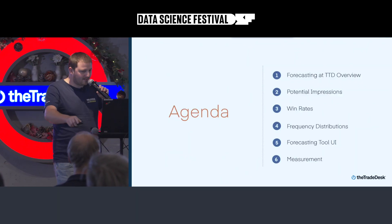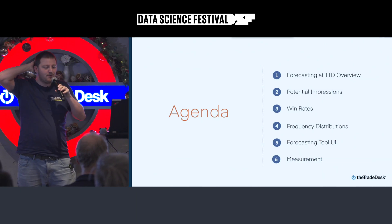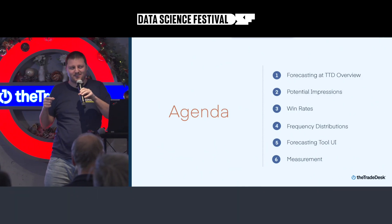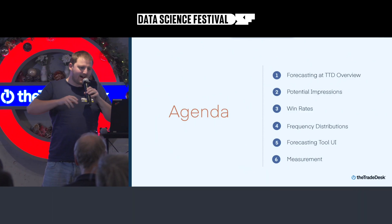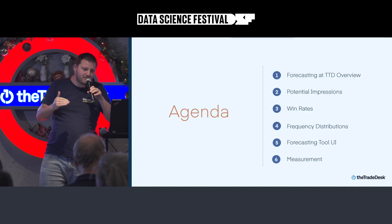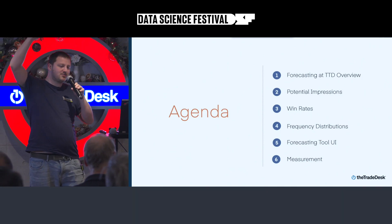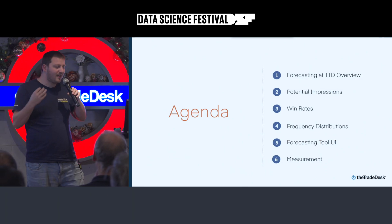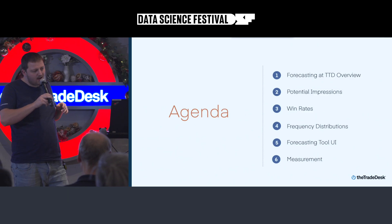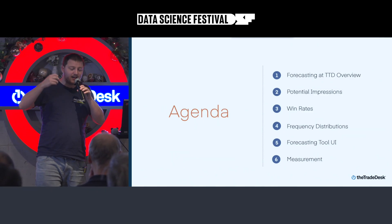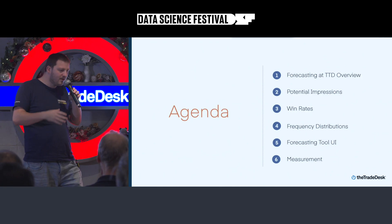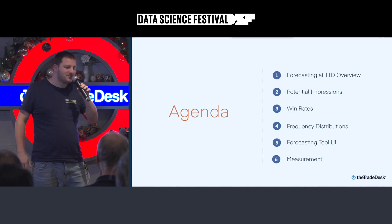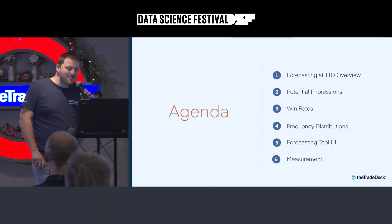Agenda-wise: first we'll look at forecasting at the Trade Desk — what it is and what it isn't. Then we'll work through the funnel, starting with potential impressions and then a series of scaling factors we use to reduce that down to tangible business metrics. After that we'll have a look at the forecasting tool, and finally we'll talk about how we measure this problem, which is a bit of an awkward one.